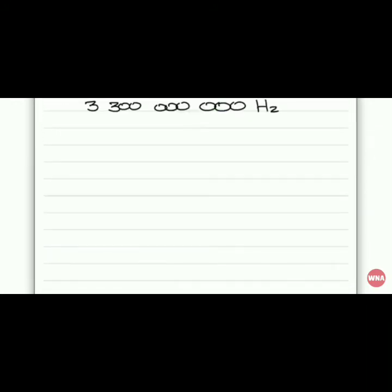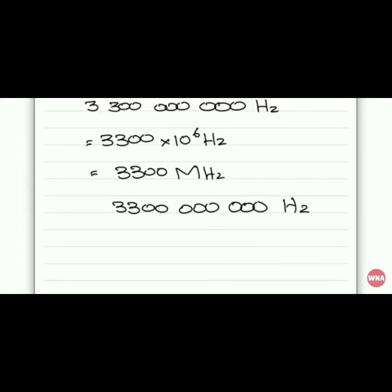Look at this number with the unit hertz. We can write this number in prefix form. First, we have six zeros. We can write six zeros in the form of 10 to the power 6. And we know that 10 to the power 6 means we can use the prefix mega. So it will become 3,300 megahertz, or 3.3 gigahertz.